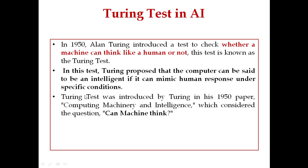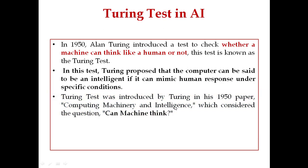The Turing test was introduced by Alan Turing in his 1950 research paper. The name of the paper is 'Computing Machinery and Intelligence,' and this paper considered the question of whether a machine can think.